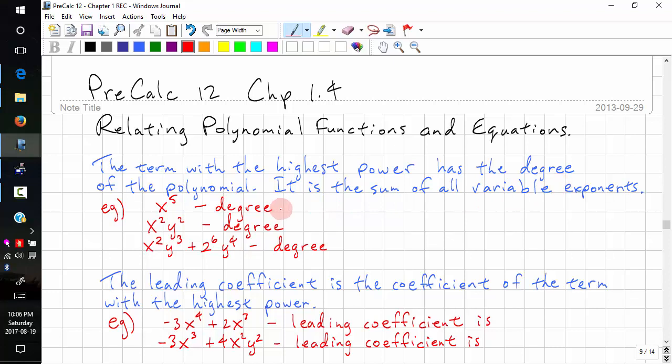So let's look at some examples. x to the 5, that's pretty straightforward, that's degree 5. So we sum the variable exponents. 2 plus 2, so this is degree 4.